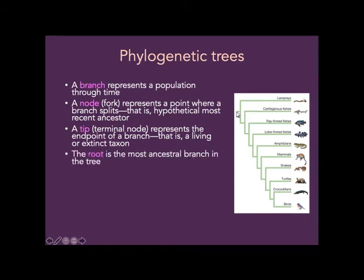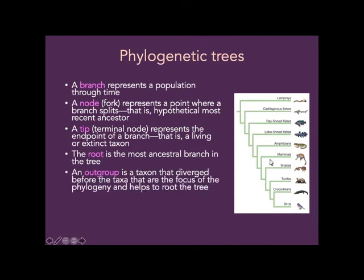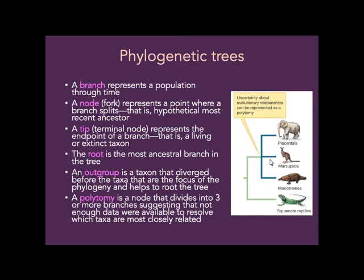The root is the most ancestral branch in the tree. When we make a tree, we'll often use an outgroup — that's a taxon that diverged before the taxa we're actually interested in studying. The outgroup helps us root the tree. If we want to know what the ancestor of our group of organisms looks like, we pick a more distantly related species on the presumption that it may have more resemblance to the ancestor.